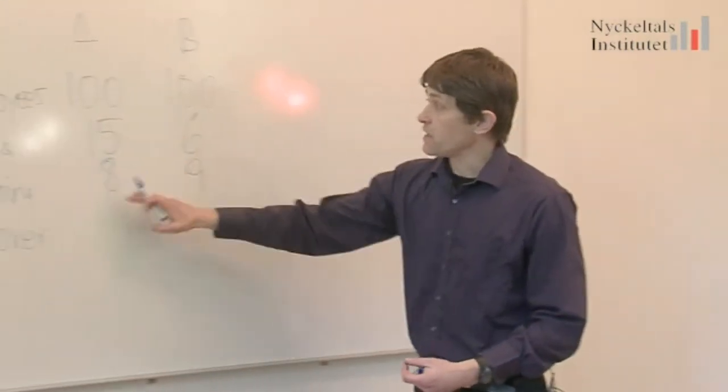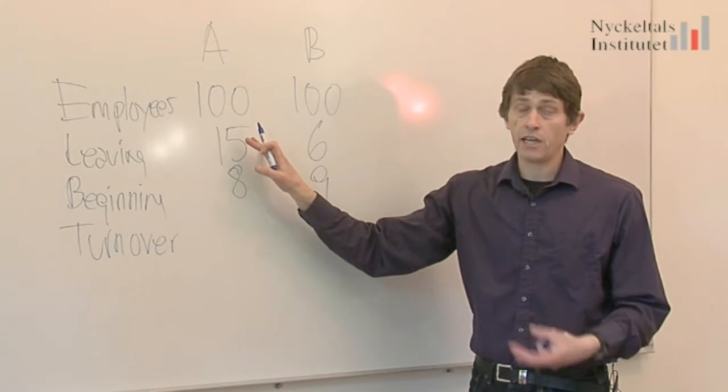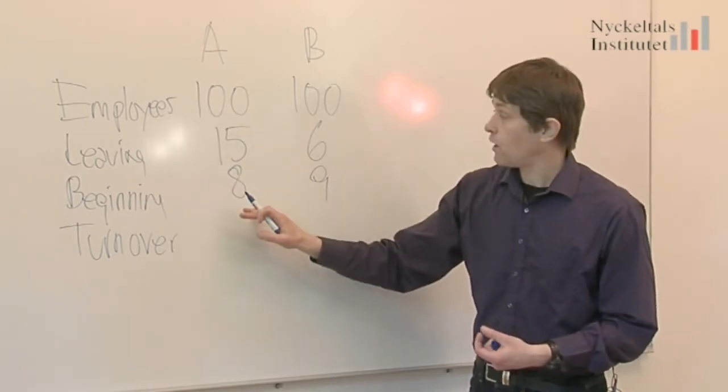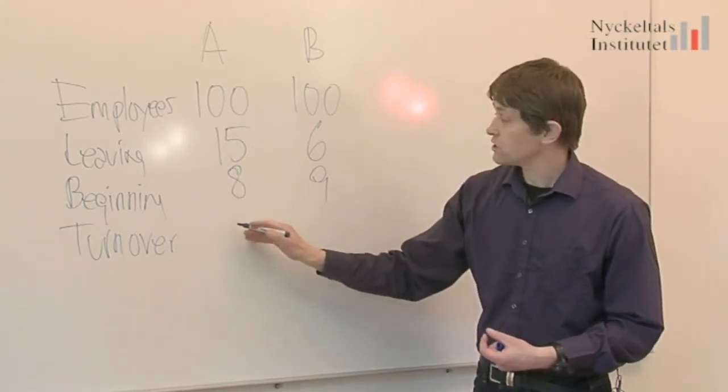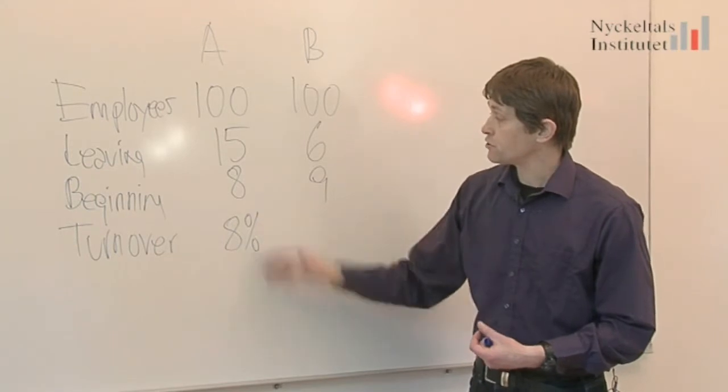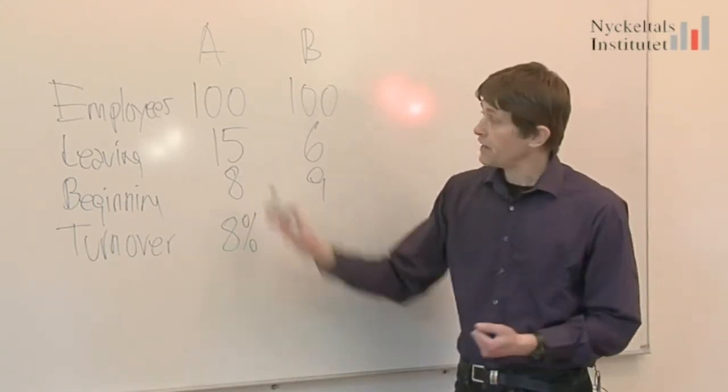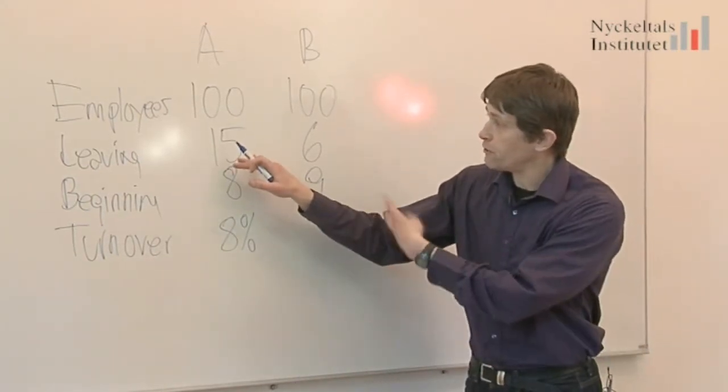In A we have 15 leaving and how many of those are replaced? Well, apparently only 8. So we have 8% personnel turnover. And the other 7, what kind of figures are they?